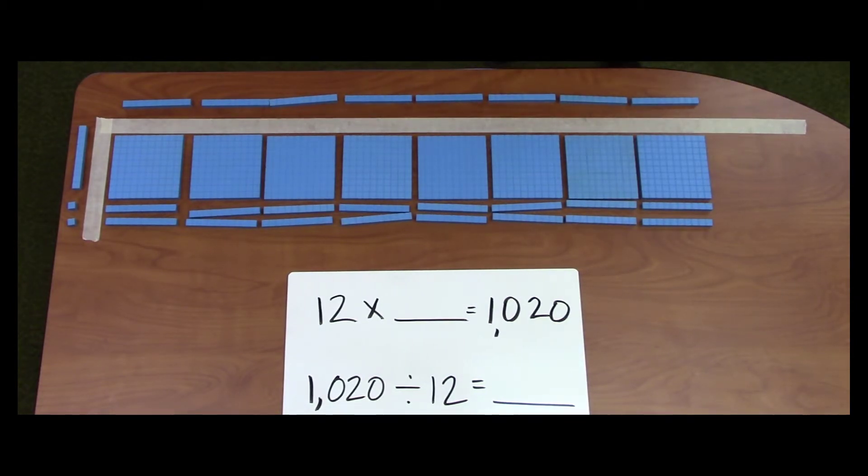I can subtract 960 from the 1,020 to figure out how much more I need to add to my area. Since 1,020 minus 960 equals 60, I need 60 more for my area. To figure out how much more I need to add to my missing factor, I will use basic facts. An unknown times 12 equals 60. Well, 5 times 12 equals 60, so I need to place 5 unit cubes at the top to complete my missing factor.